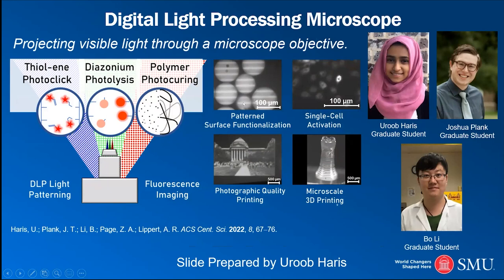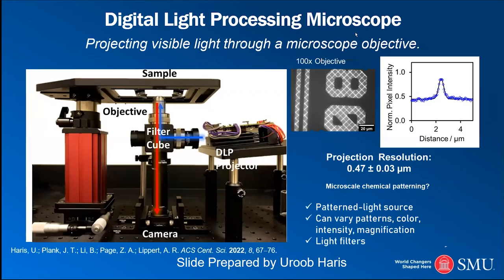What we've done recently and published is develop a fluorescence microscope that uses digital light processing with different photochemical systems to do chemistry at the ultra-small scale, including patterning microscopic beads on polymer films and in living cells. We've also done microscopic 3D printing. This work was done by Urub Harris, Josh Plank, and Boley, led by Urub. We built a microscope where instead of a traditional light source we use a DLP projector to pattern light through a microscope objective, getting very high resolution of a couple hundred nanometers.